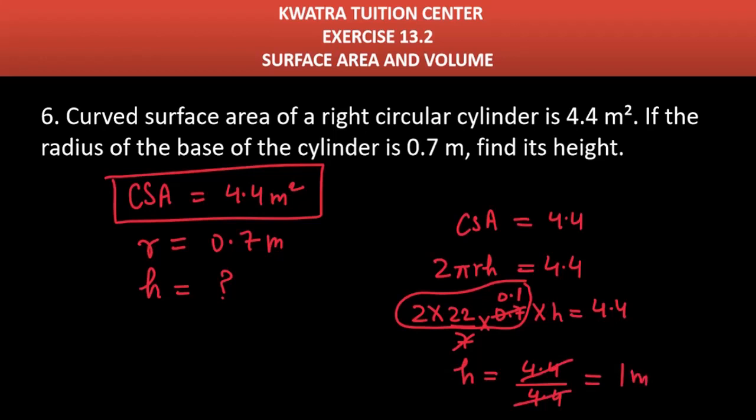So yes, answer for right circular cylinder height is 1 meter. Now moving to question number 7.